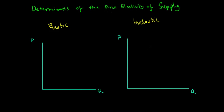In the previous lecture on the price elasticity of supply, we determined that the price elasticity of supply refers to the responsiveness of producers to increase or decrease their supply relative to changes in price. Because producers are profit-maximizing, they see additional profit opportunities in the market when prices increase, and so according to the law of supply, they increase their quantity supplied.